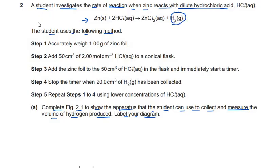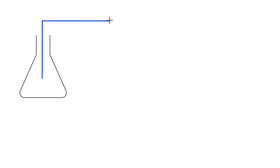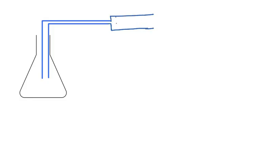Here is the reaction. You can see one of the products is hydrogen gas, and to collect the hydrogen gas and to measure it we are supposed to label and complete the diagram shown here. I am going to draw a tube which can connect us to a gas syringe to collect the hydrogen gas. The gas syringe should show graduation marks to measure the volume of hydrogen gas.